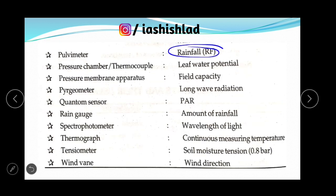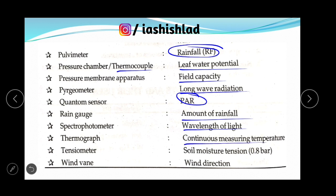Rain gauge is used to measure rainfall. Pressure chamber or thermocouple is used to measure leaf water potential. Pressure membrane apparatus is used to measure field capacity. Pyrradiometer is used for long wave radiation. Quantum sensor is used for photosynthetically active radiation. Rain gauge is used to measure amount of rainfall. Spectrophotometer is used to measure wavelength of light. Thermograph is used to measure temperature continuously. Tensiometer is used to measure soil moisture tension. Wind vane is used to measure wind direction.